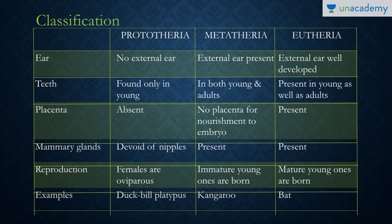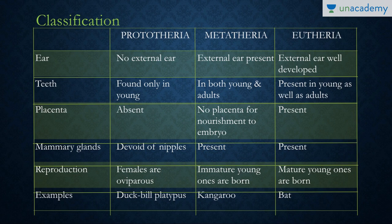The class Mammalia is classified into three subclasses: Prototheria, Metatheria, and Eutheria. Prototheria does not have any external ears, while both Metatheria and Eutheria have an ear pinna. Teeth are absent in adult Prototheria, while they are present in both young and adults in Metatheria and Eutheria. Placenta is absent in Prototheria because they are oviparous. In Metatheria there is also no placenta, so immature young ones are born and need to be carried in the mother's pouch to fully develop.